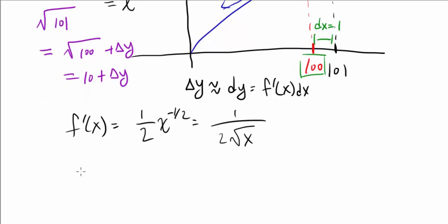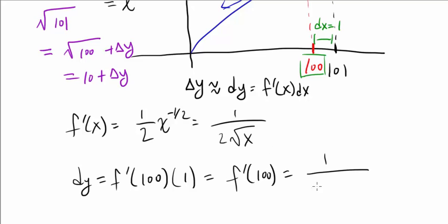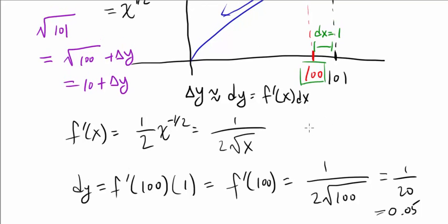So what's our dy? Our dy is f'(100) times dx, which is 1. So just f'(100) is going to be, and f'(100) is 1 over 2 times square root of 100, which gets us 1 over 20 or 0.05. Because you can multiply by 5 and that gets you 5 over 100. So we know delta y is approximately dy or 0.05.